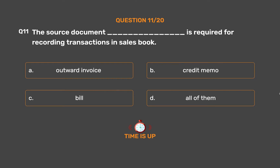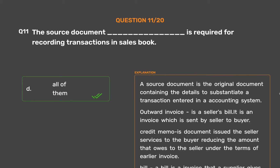The correct answer is option D: all of them. A source document is the original document containing the details to substantiate a transaction entered in an accounting system. An outward invoice is a seller's bill — an invoice sent by the seller to the buyer. A credit memo is a document issued by the seller to the buyer, reducing the amount owed under the terms of an earlier invoice. A bill is an invoice that a supplier gives to customers, which they have to pay.